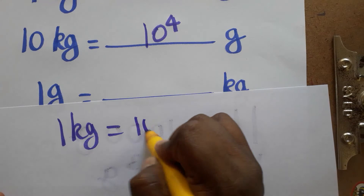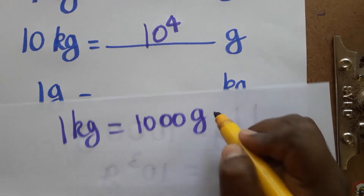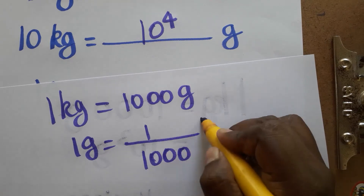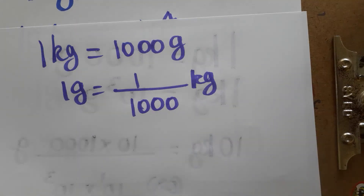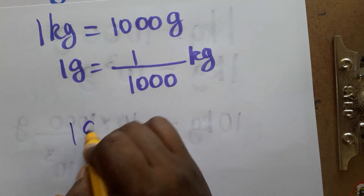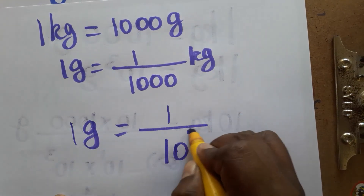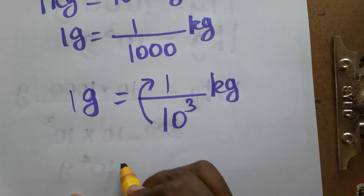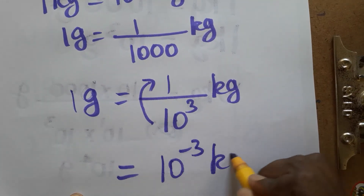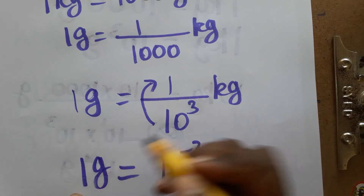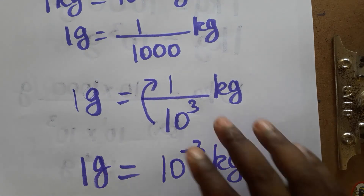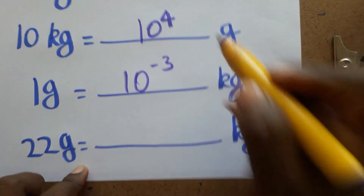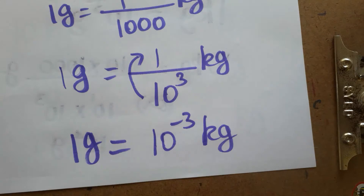Now: 1 gram is equal to how many kilograms? Since 1 kg is equal to 1000 grams, 1 gram is equal to 1 divided by 1000 kg. We can write 1000 as 10 power 3, so 1 gram equals 1 divided by 10 power 3 kg. Moving 10 power 3 from the denominator gives us 10 power minus 3 kg.